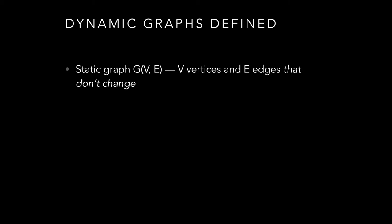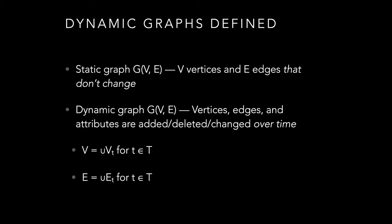But we know that's not true, especially when we consider social media, where people add friends or delete friends, and new people come onto the networks. Dynamic graphs account for this by saying vertices, edges, and attributes can be added, changed, or deleted over time. The set of vertices can be represented as the union of all vertices over all time slices, and edges likewise as the union of all edges for all time slices.